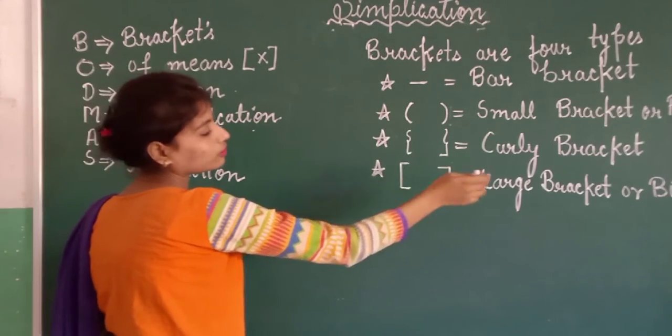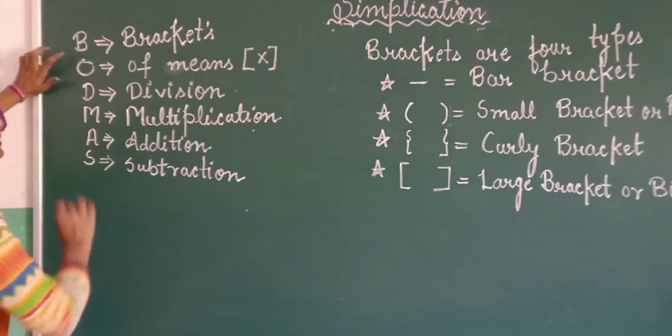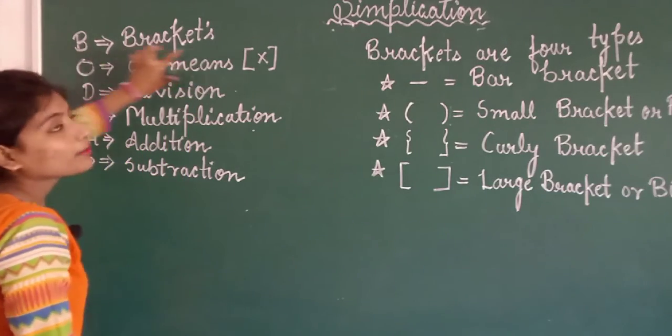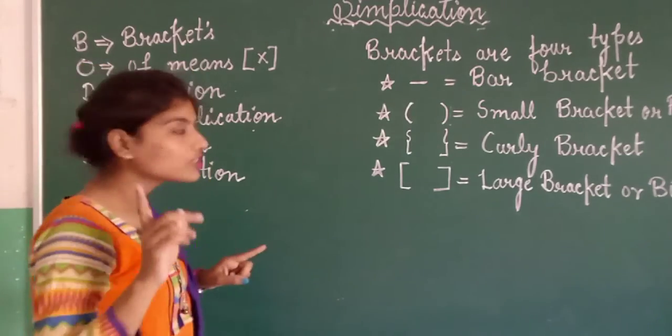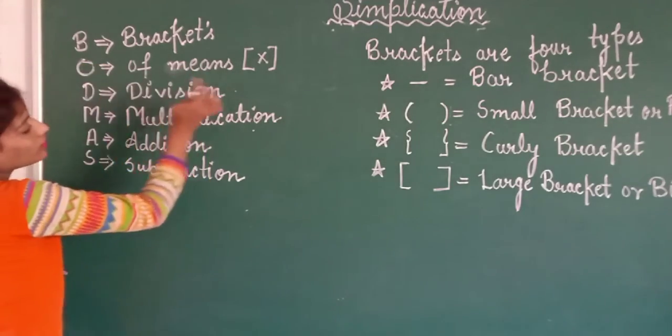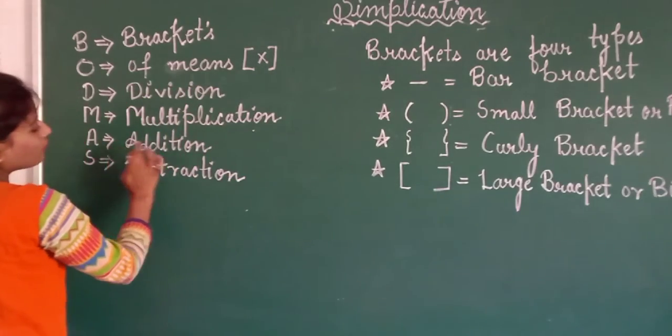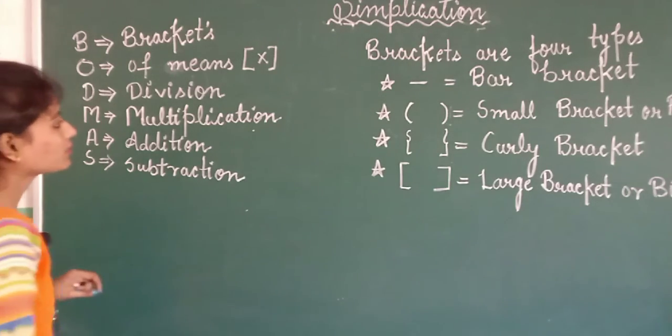So firstly we will discuss about BODMAS. B for brackets, O for off means multiplication, now next is D for division, M for multiplication, A for addition, S for subtraction.